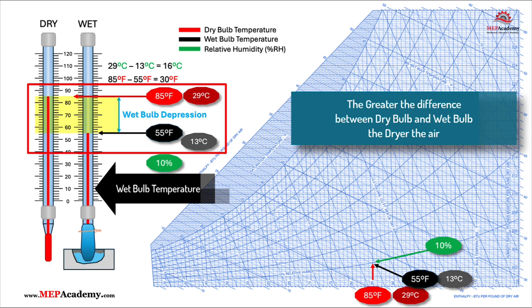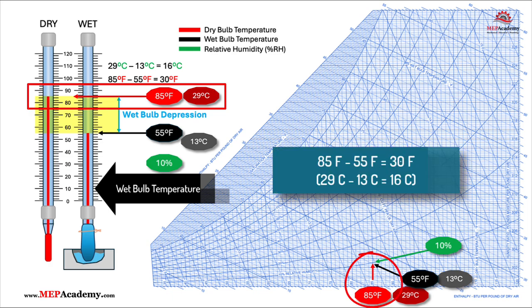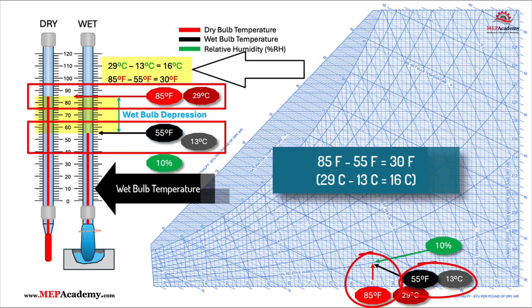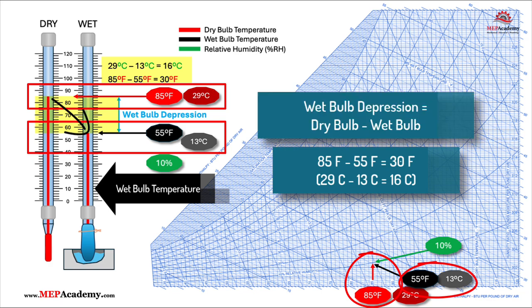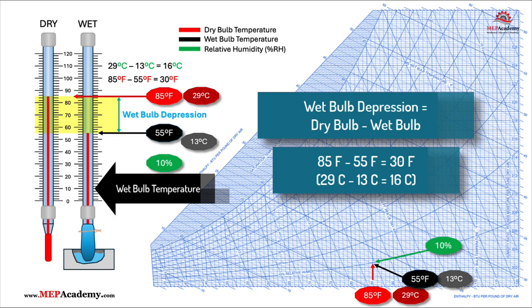We can see on this psychrometric chart that a dry bulb temperature of 85°F minus a wet bulb temperature of 55°F equals a wet bulb depression of 30°F, or 16°C. Wet bulb depression equals dry bulb temperature minus wet bulb temperature. A high wet bulb depression means there is significant potential for evaporative cooling.